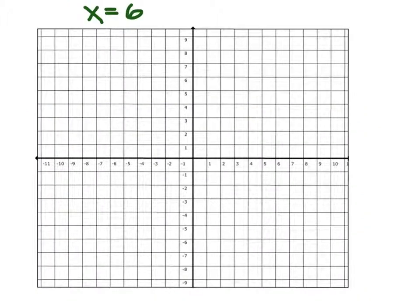If I have x equals 6 though, find 6 on the x axis and make a line go straight up and down through it.